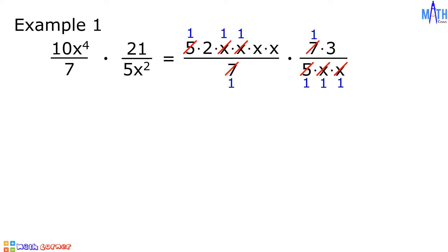Step number three, let us multiply the remaining factors. In the numerator, we have 6x squared. In the denominator, we have 1. 6x squared divided by 1 equals 6x squared. And this is the answer.